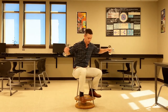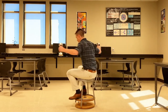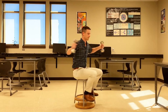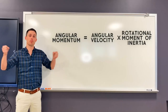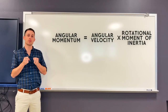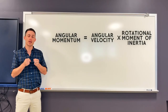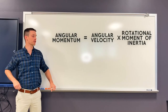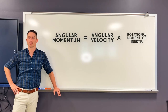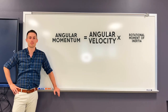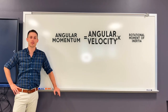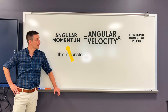So when the person holding masses out to their side and sitting in the chair is spinning, as they pull those masses inward, the rotational moment of inertia decreases. And as a result, the angular velocity must increase in order to conserve that angular momentum.